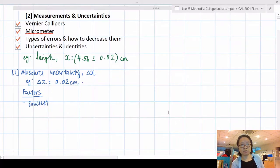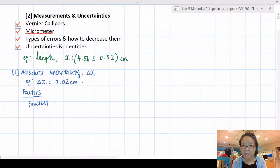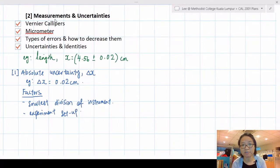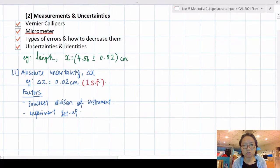Factors that affect the size of absolute uncertainty include the instrument you use. A micrometer has a smaller uncertainty than a meter rule. We generally take the smallest division of your measuring instrument. It also depends on the experiment setup. Absolute uncertainty is 1 SF, very important, I will repeat this over and over.